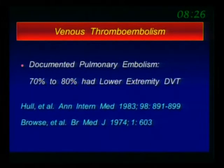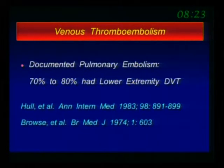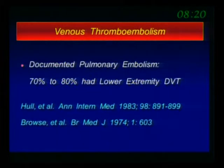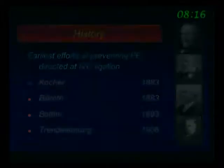Since most of the PEs come from the lower extremities, there's a tendency to place filters in the inferior vena cava and not the superior vena cava, since 70% to 80% of them are coming from the lower extremities.